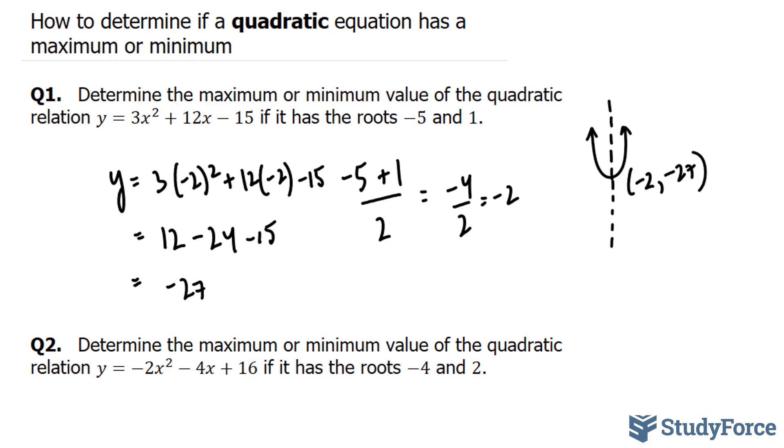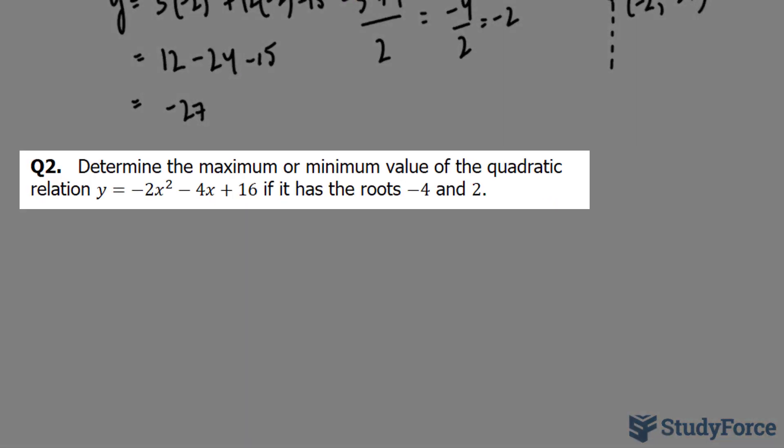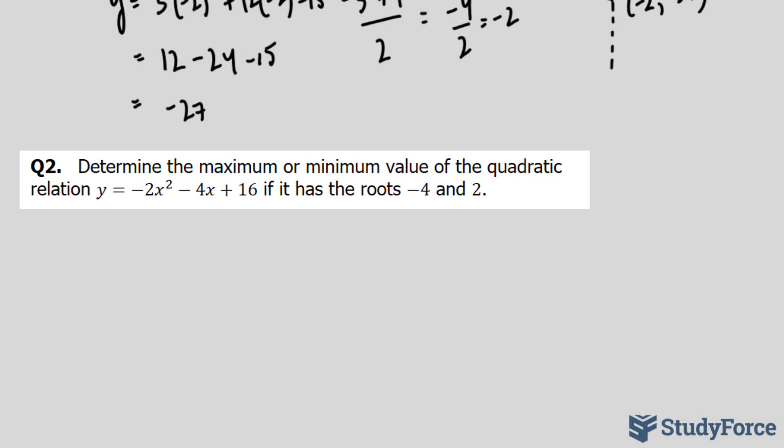Let's move on to question 2. Question 2 asks the same thing as question 1. Determine the maximum or minimum value of the quadratic relation. So we're going to follow the exact same steps as before, but notice this time the a term of this quadratic equation is a negative. Therefore, the quadratic will be pointing downwards, and you'll have a maximum.